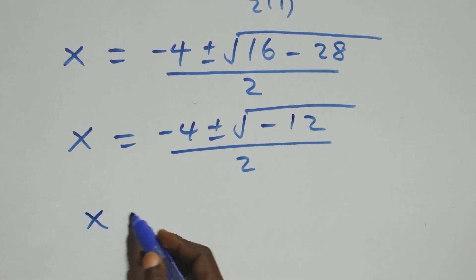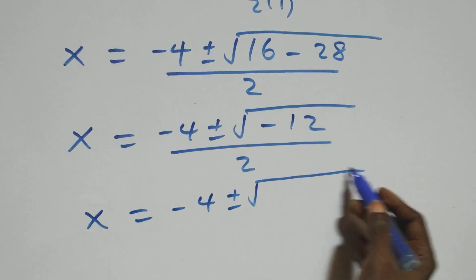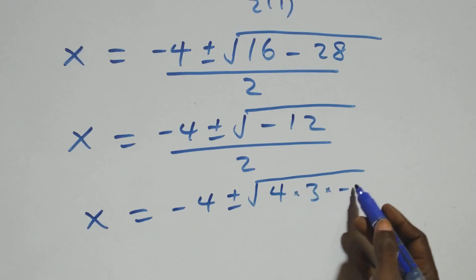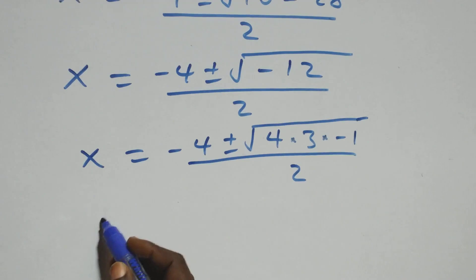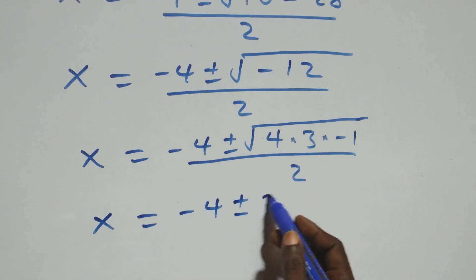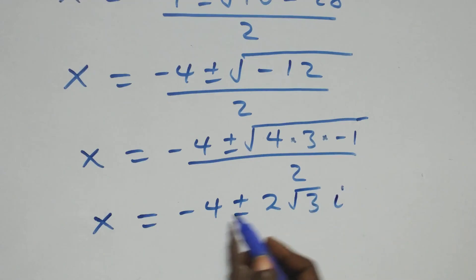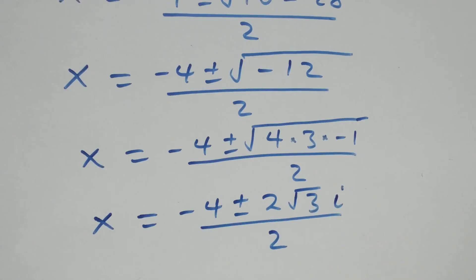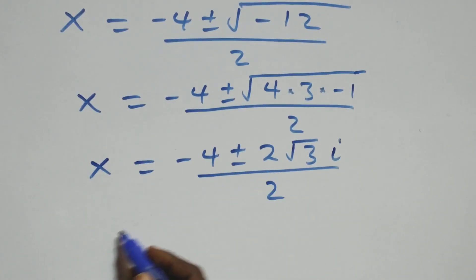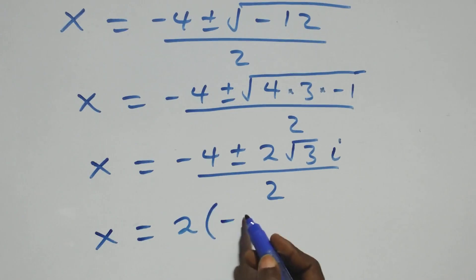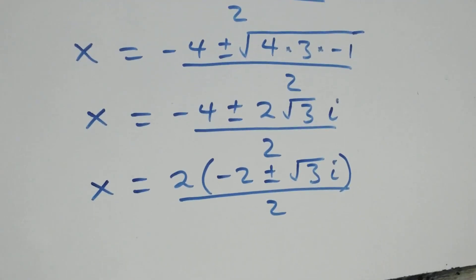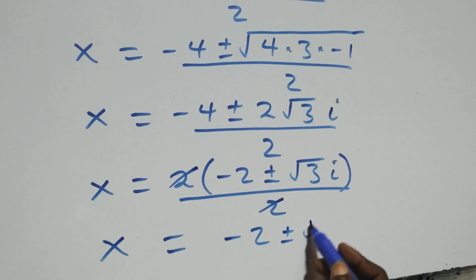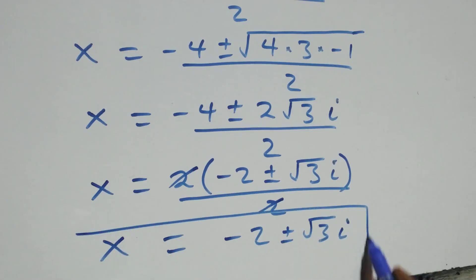Then here we have x equals to minus 4 plus or minus square root of negative 12, all over 2. Which we can also write as x equals to minus 4 plus or minus square root of 4 times 3 times negative 1, over 2. When we separate this, root 4 that is 2, we take it away: x equals to minus 4 plus or minus 2 root 3 i, over 2. We factor 2 out, and we have x equals to 2 into brackets, minus 2 plus or minus root 3 i, over 2. The 2s cancel each other, and we are left with x equals to minus 2 plus or minus root 3 i. Here we have 2 complex solutions.